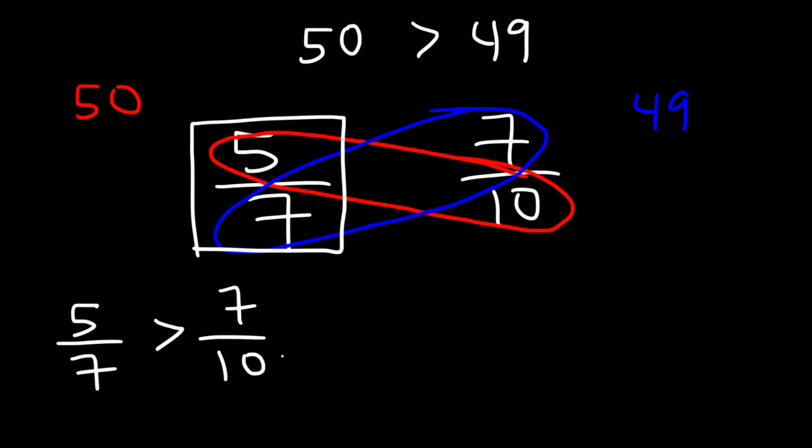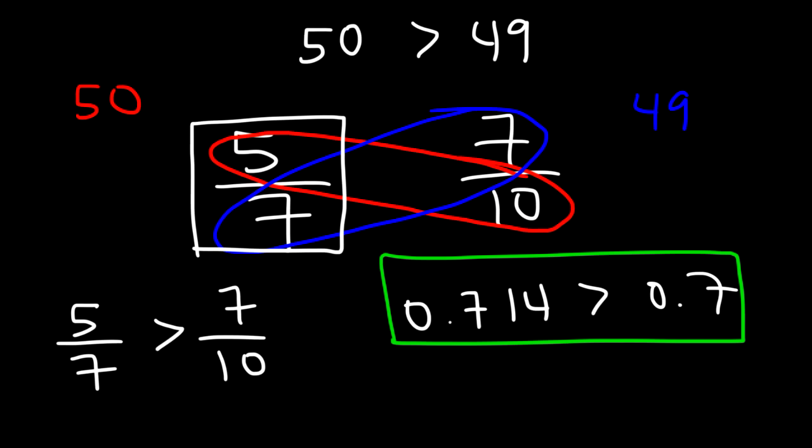So let's type in 5 divided by 7 into the calculator. And so that's going to be about 0.714 if you round it. And 7 divided by 10 is 0.7. So that's another way you can confirm which fraction is larger in value.